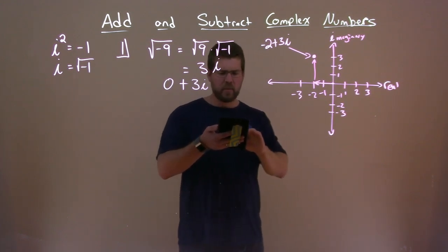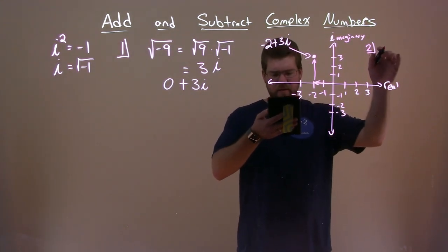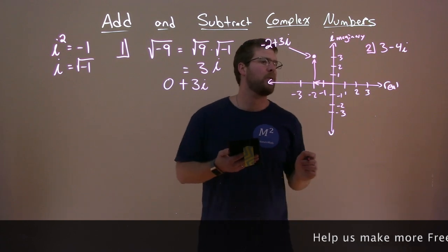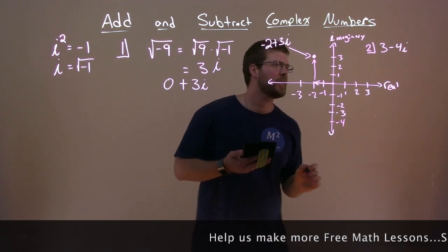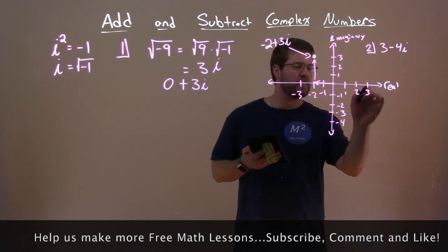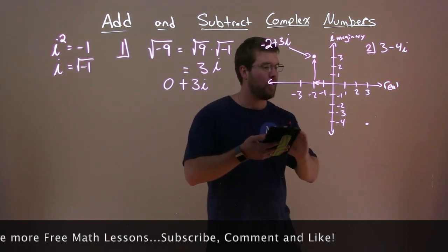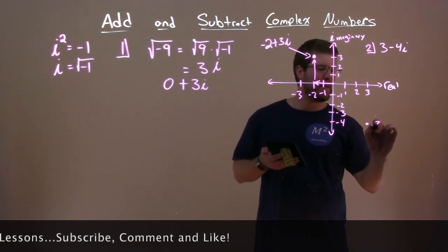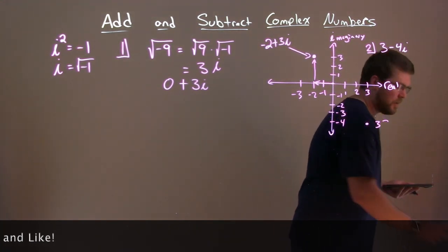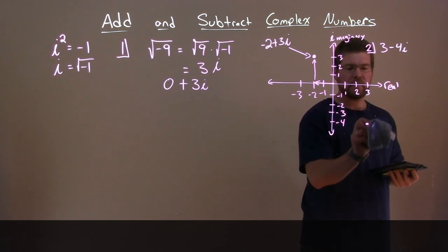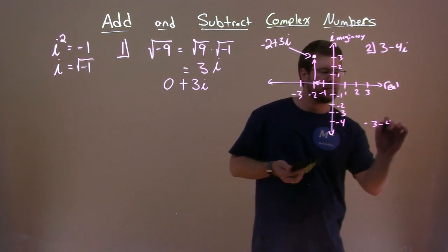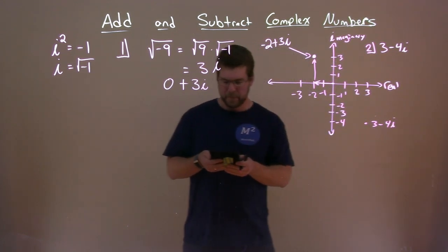So let's go plot another point here. Number 2, we want to plot 3 minus 4i. Let's go plot that. All right, let's bring this down a little more here. So 3 minus 4i, how can I plot that? Well, I'm 3 on my real axis, and then I'm minus 4i on my imaginary axis, and that point here will be represented as 3 minus 4i.